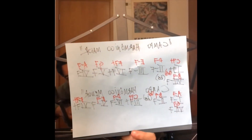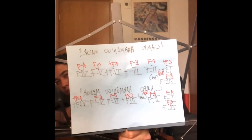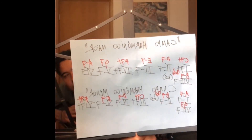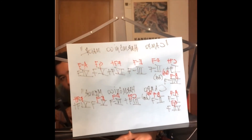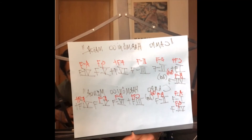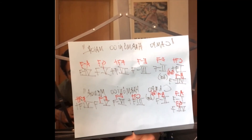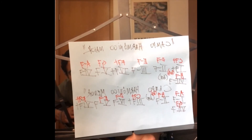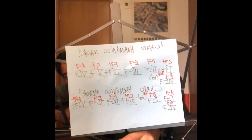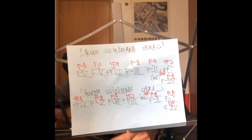I wrote that here in a summarized way. In Roman numerals — because we generally write it in Roman numerals — I wrote all of them there in red, thinking in the key of C major. And now, below that, is what I wanted to talk to you about: how do we find the minor harmonic field?